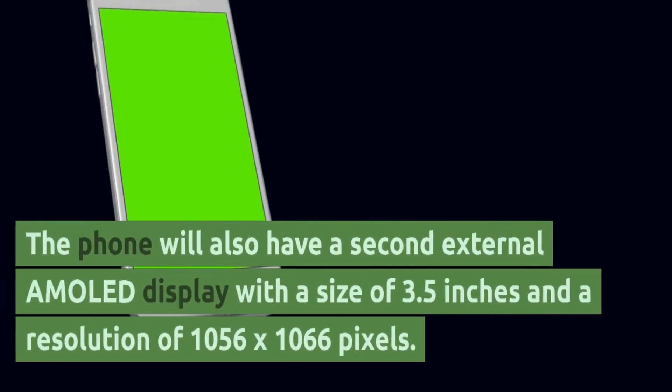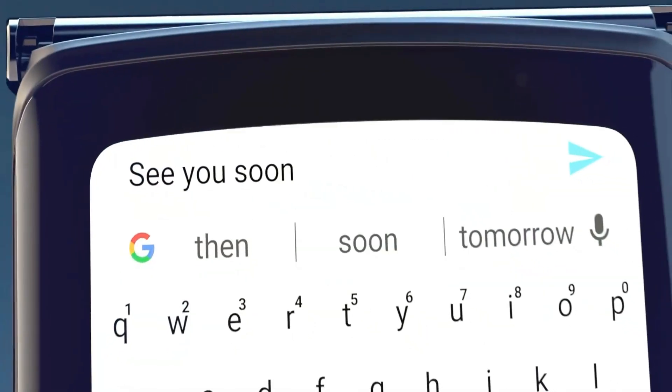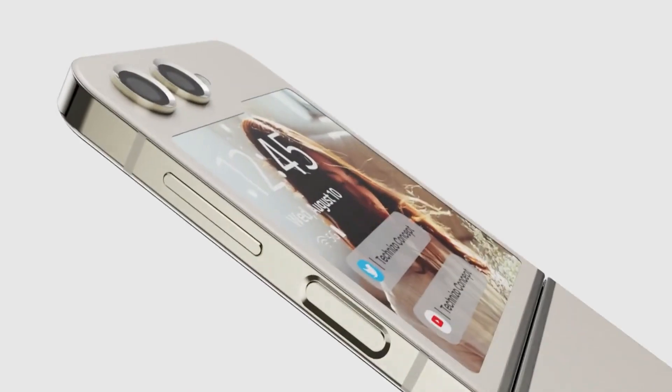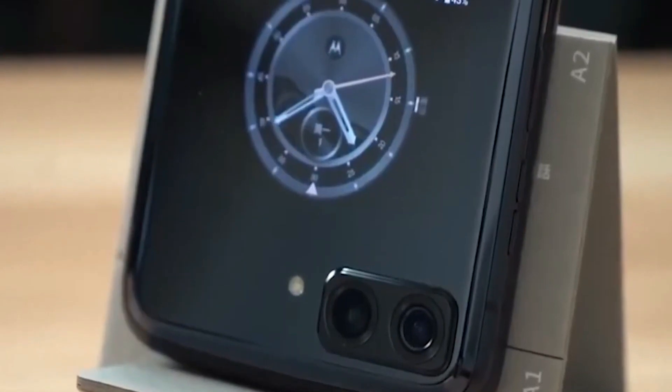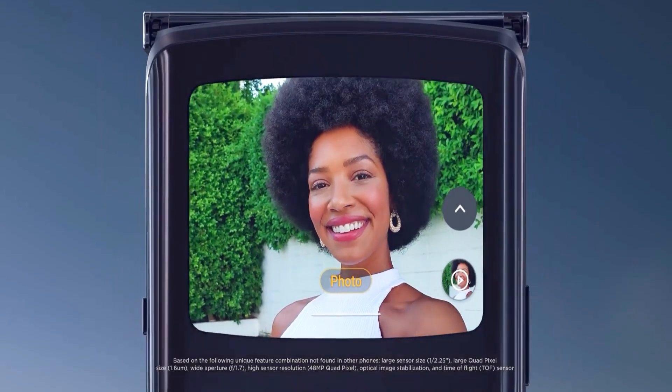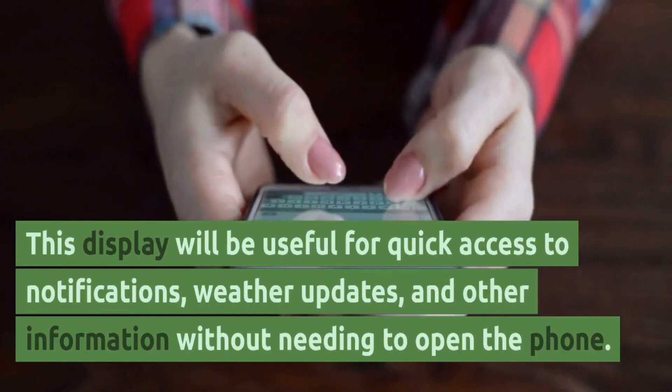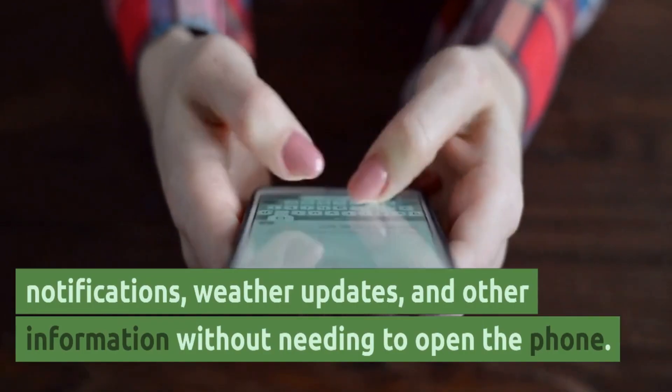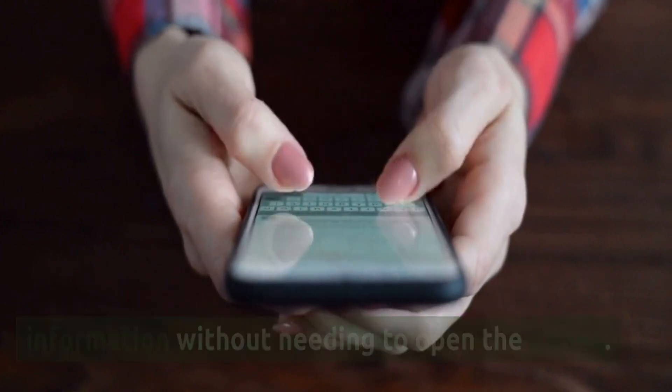The phone will also have a second external AMOLED display with a size of 3.5 inches and a resolution of 1056 by 1066 pixels. This display will be useful for quick access to notifications, weather updates, and other information without needing to open the phone.